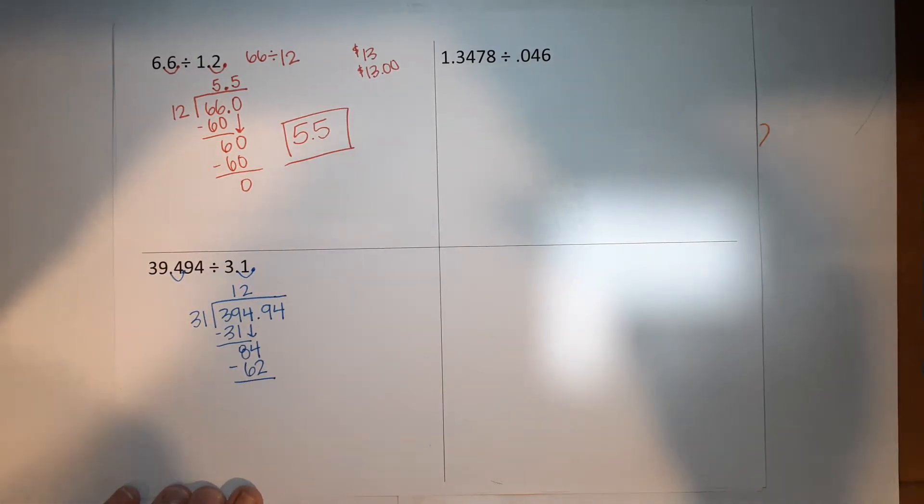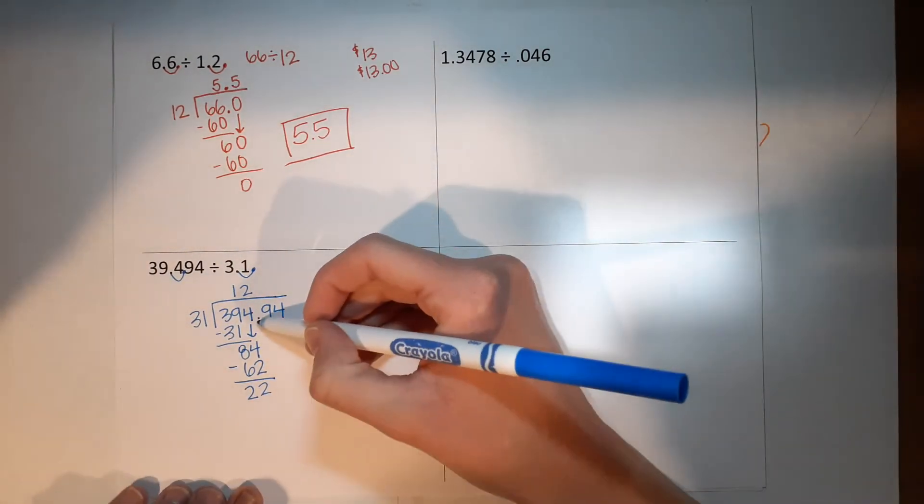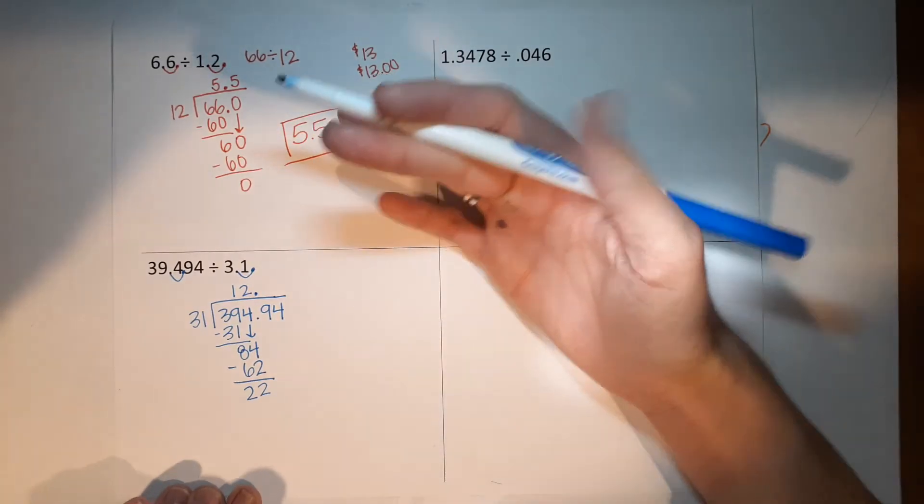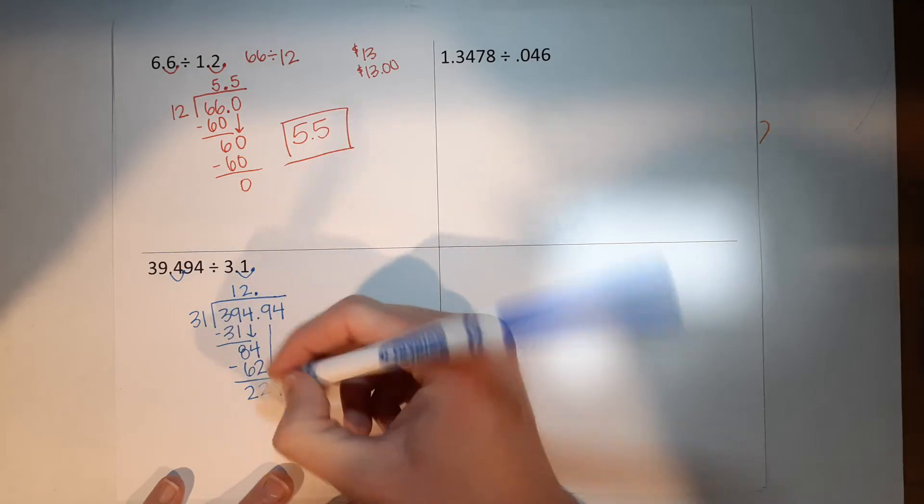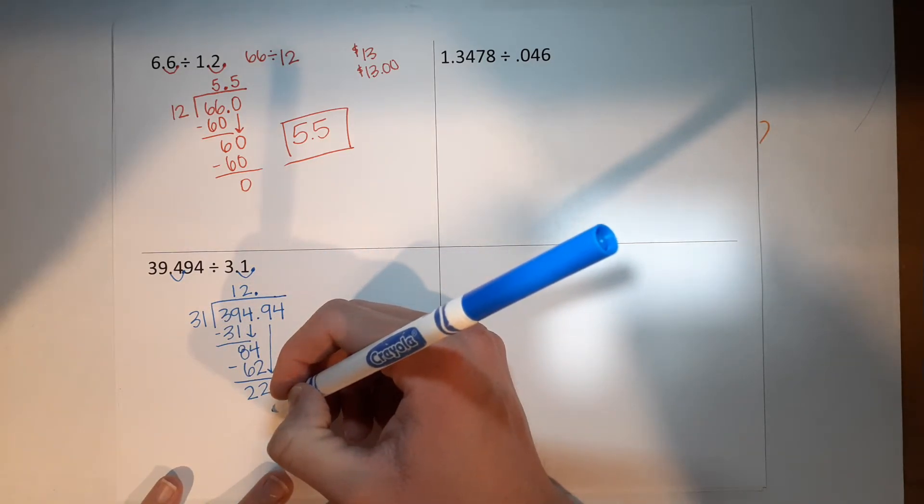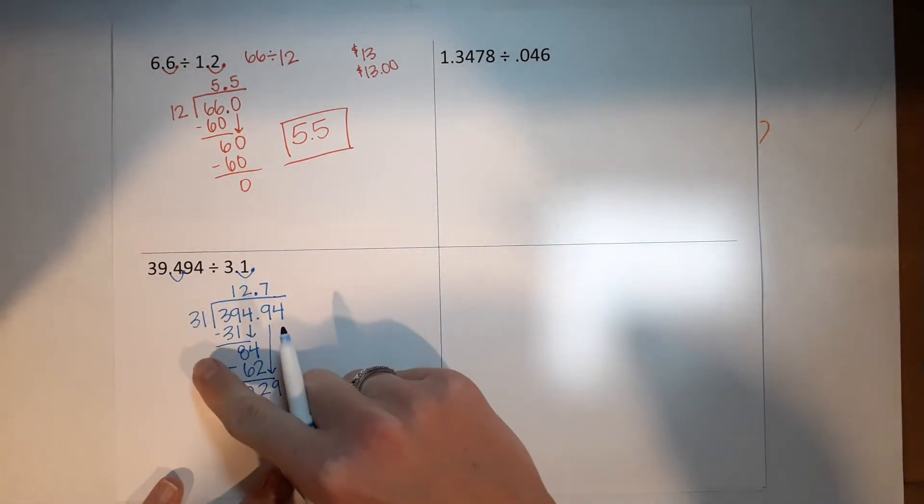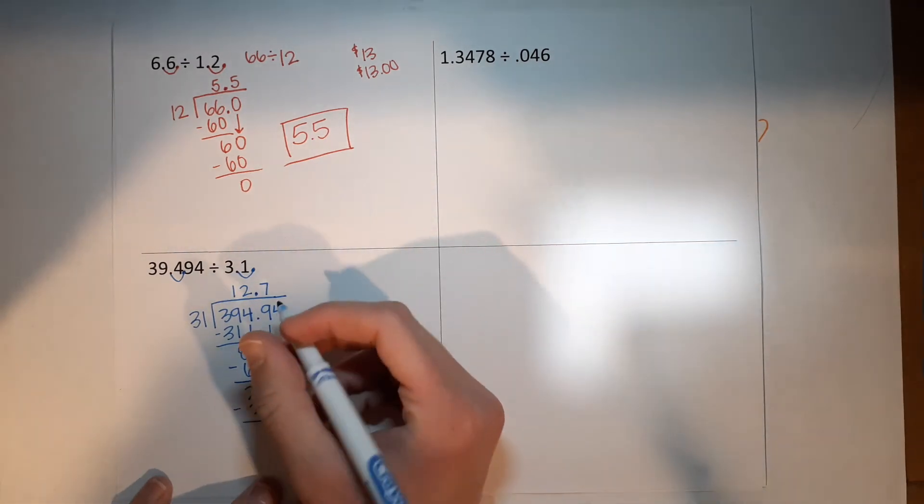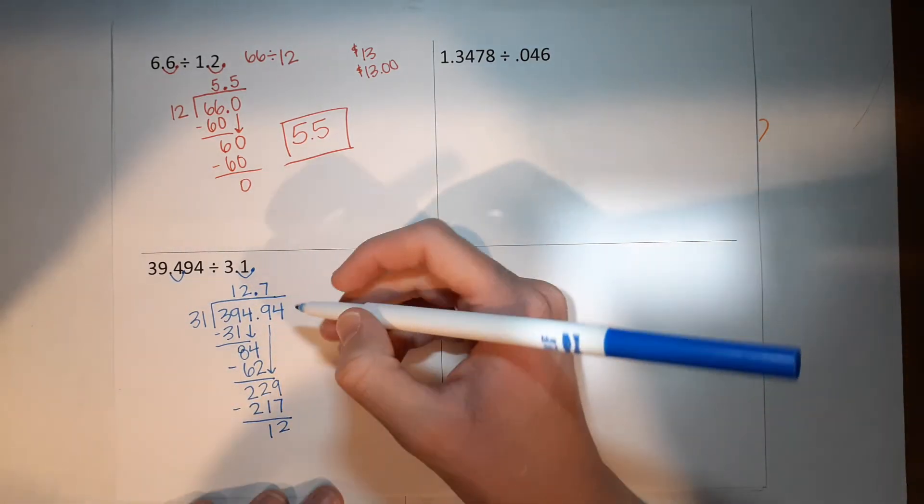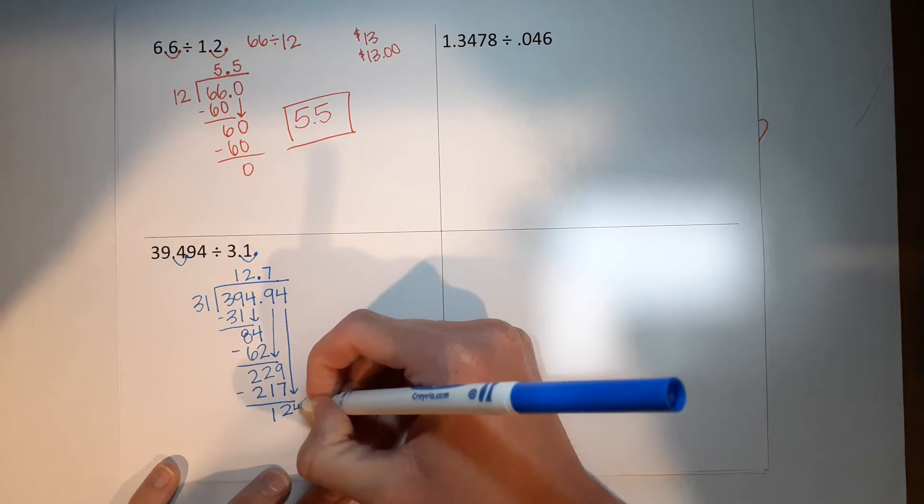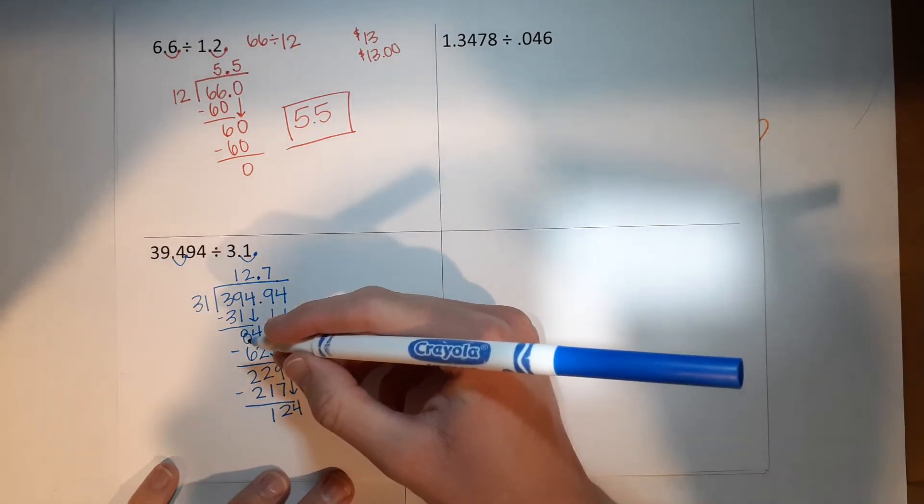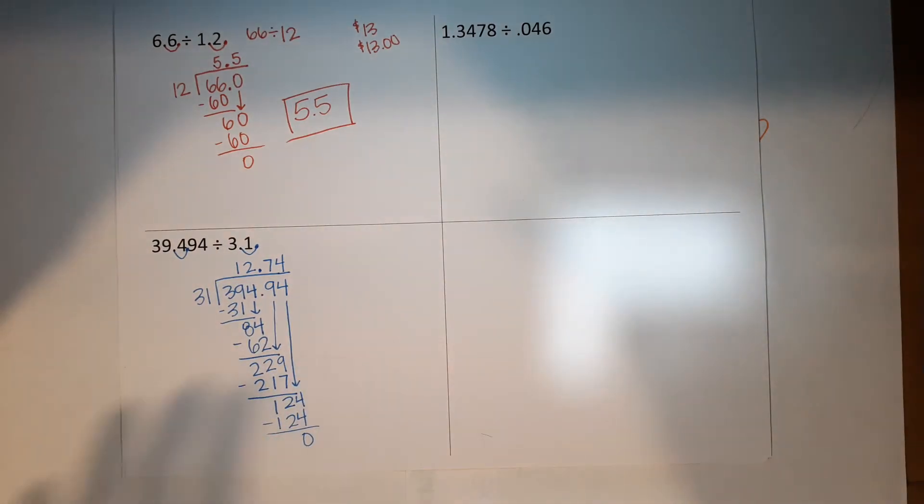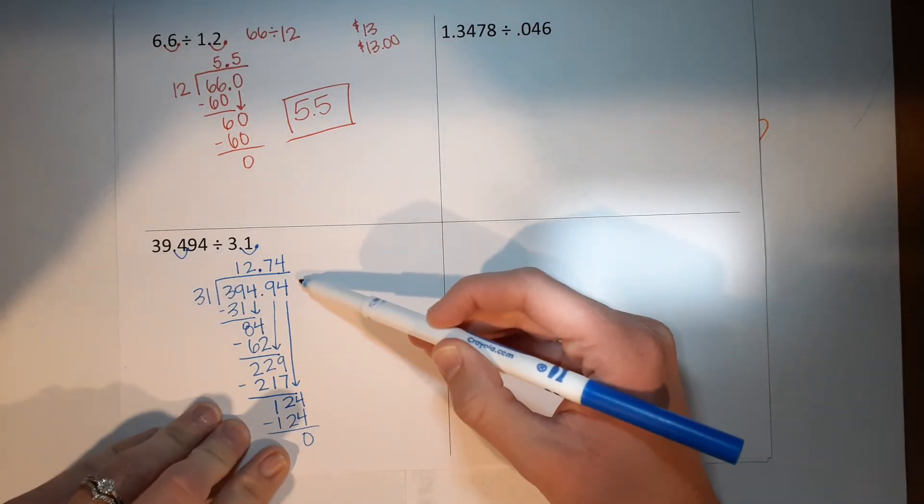And then I go ahead and subtract that and I get 22. Now we're to the decimal. This just goes straight up. That's why it's important to make sure you're lining these numbers up correctly, so your decimal ends up in the right place. Now bring down this 9. 31 goes into 229 seven times, because seven times 31 gives me 217, and then when I subtract that I get 12. Now I'm going to bring this 4 down. 31 goes into 124 four times. Four times 31 gives me 124, and I'm left with zero. Awesome.